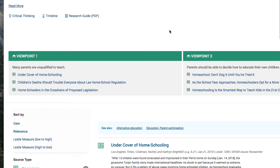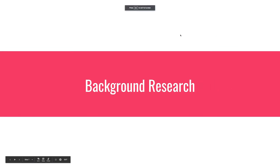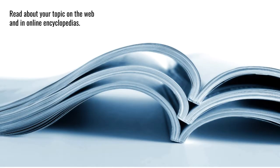Many of these topics are quite broad, so you'll want to think about ways that you can narrow them down. You can come up with ways to narrow a topic down through a process called background research. Background research is when you read about your topic on the web and in online encyclopedias — even somewhere like Wikipedia — and you take note of the lingo, jargon, and keywords that are associated with the topic of interest. These aren't sources for your paper; they're just a way to get ideas on how you can develop a research question.